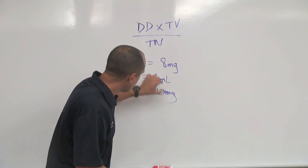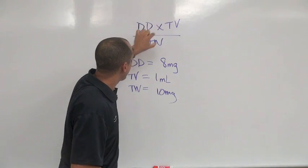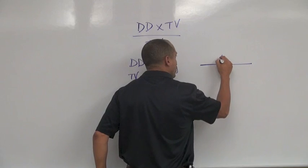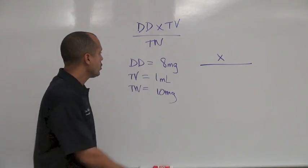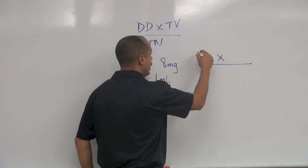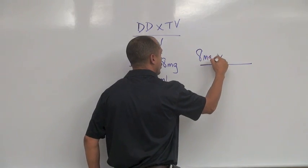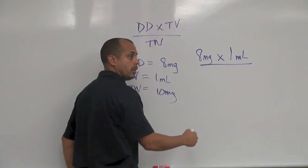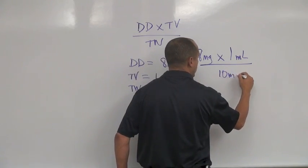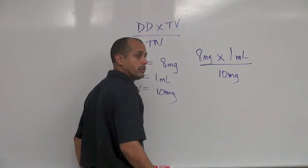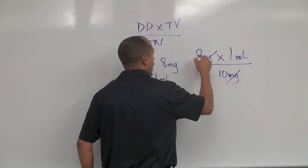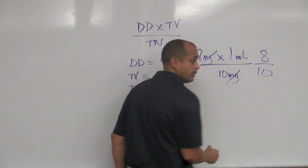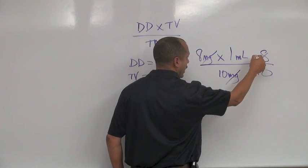So now I'm going to take these numbers and plug them into the right places. What goes here? Eight milligrams. What goes here? One ml. What goes here? Ten milligrams. What's the same, Leo? Milligrams — cross them out. Eight times one is eight, divided by ten.